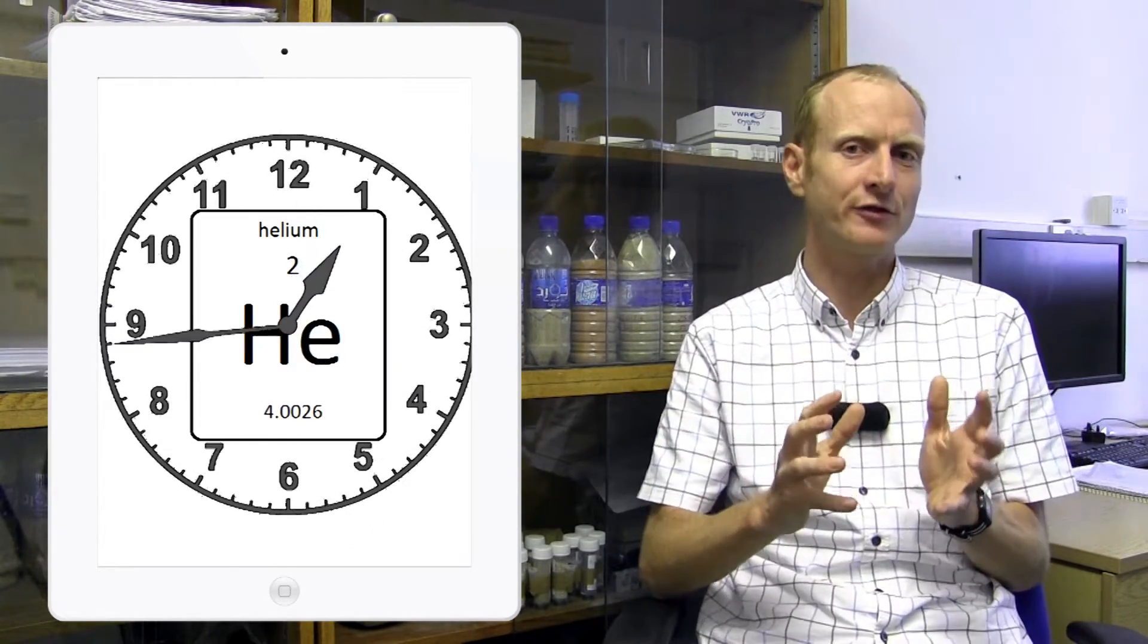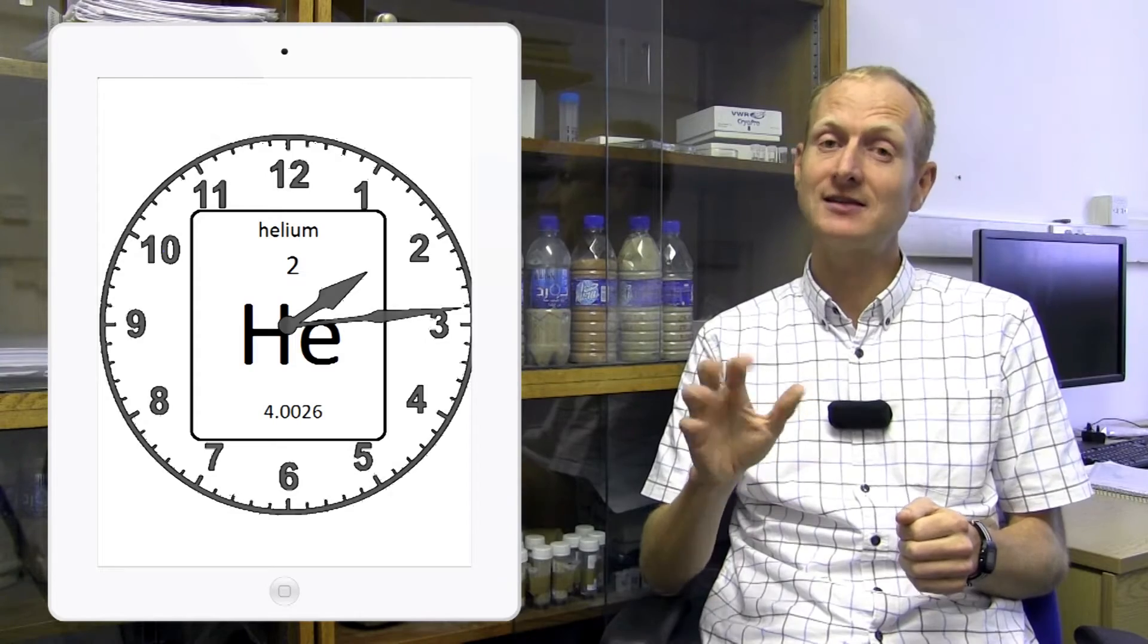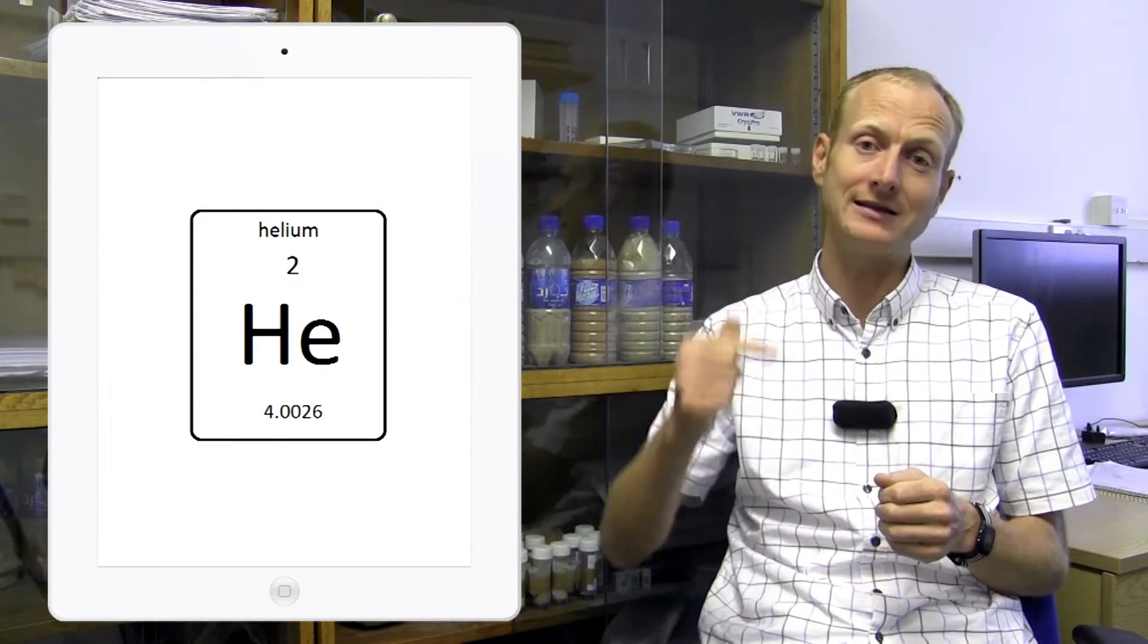For apatite calcium phosphate, which is our main phase of interest for the helium clock, this temperature is about 60-70 degrees, which corresponds to a depth in the crust of two to three kilometers.